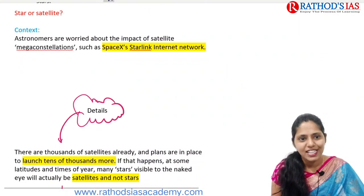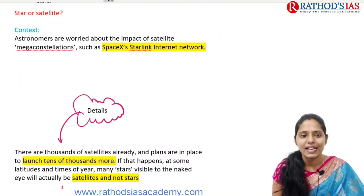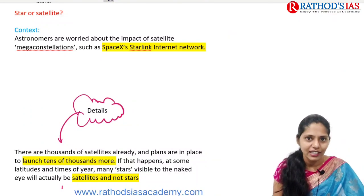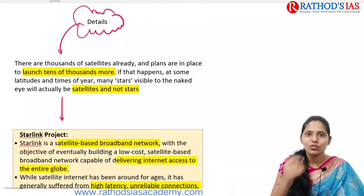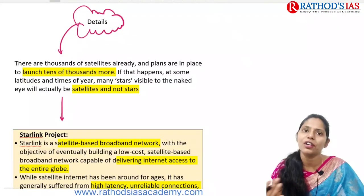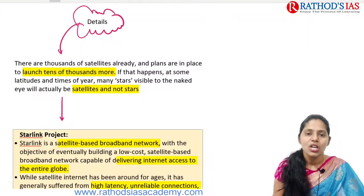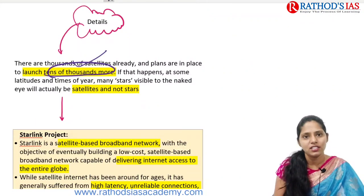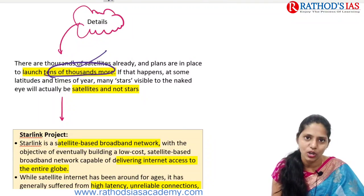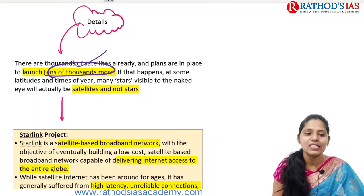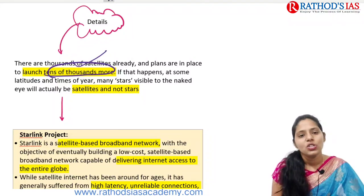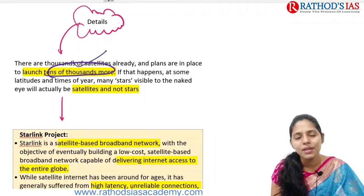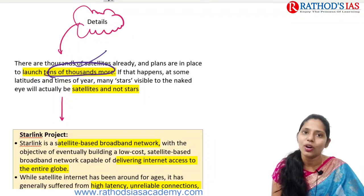Astronomers are worried about the impact of satellites — mega-constellations such as the Starlink internet network. There are already thousands of satellites around Earth in different orbits like low Earth orbit and middle Earth orbit. Plans are mainly seen regarding the launch of tens of thousands more satellites into low Earth orbit. If that happens at the same latitudes, satellites will become visible to the naked eye just like stars, making it difficult to differentiate between them.